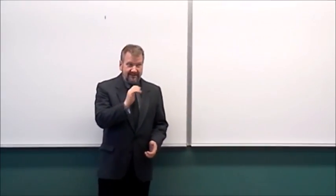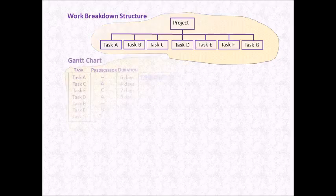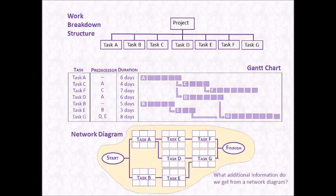So without further delay, let's get started. By now in your studies, I hope you've already encountered a work breakdown structure. This is where we take a project and we break it down into individual tasks. Being able to do this step is critical before you can begin your scheduling. I hope as well that you've also encountered a Gantt chart. A Gantt chart is a visual representation of a schedule that shows the various tasks, predecessors, and durations. In today's video, we're going to take the Gantt chart and turn it into a network diagram. The network diagram shows us considerably more information than is available within the Gantt chart, and many project managers find the network diagram to be very beneficial to a project.